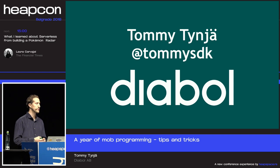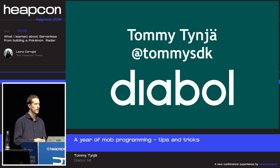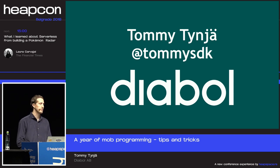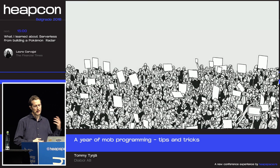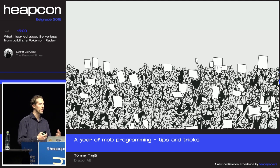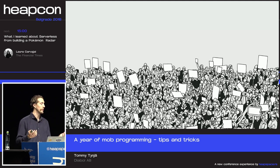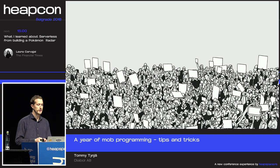Quick introduction to myself: Tom Metinia from Stockholm, Sweden. I work for a Swedish consultancy called Diabol. We help our clients become more efficient in their software development processes — implementing continuous delivery, DevOps, agile, and lean ways of working. I work as a software developer and also as an agile coach. I've been coding since I was 11. This talk is about my experiences from when I joined a development team that had just started using mob programming.